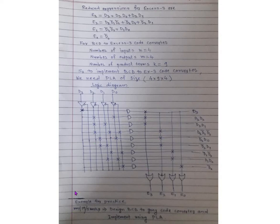One more problem for practice, which was asked in May 2019: design a BCD to Gray code converter and implement using PLA. Similarly, prepare the truth table for BCD to Gray code (4 bits), then get the reduced expression using KMAP technique.